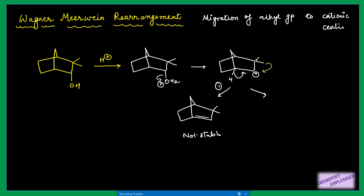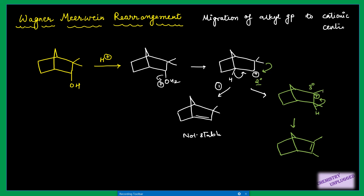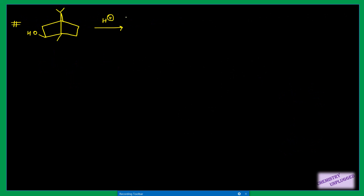The second possibility is that we migrate this methyl group. When you migrate it, this carbon will become electron deficient — you will get a positive charge here as the methyl migrates. We get a new product. Then one proton from here: this bond breaks and you get a double bond, giving your final product. We decided this based on carbocation stability — the first carbocation is secondary while this one is tertiary, so it is more stable.